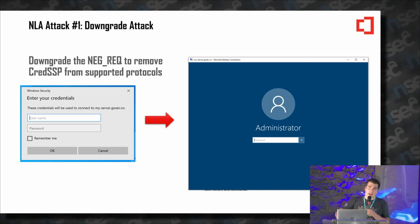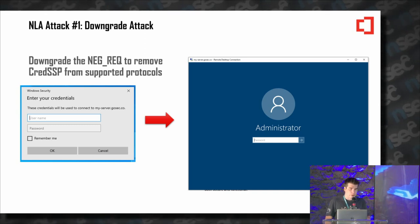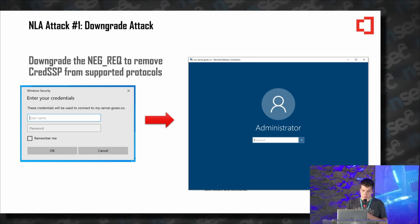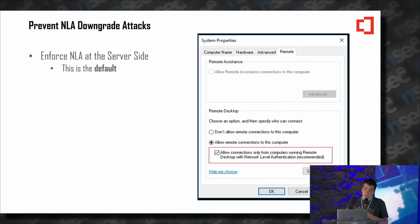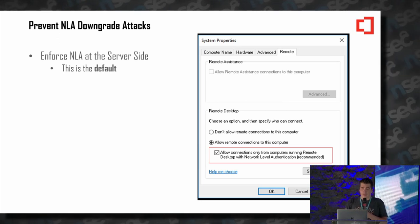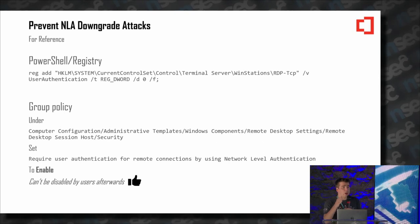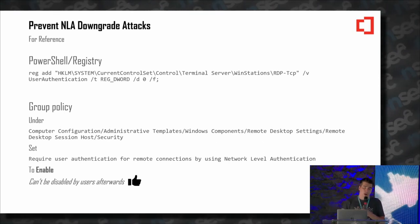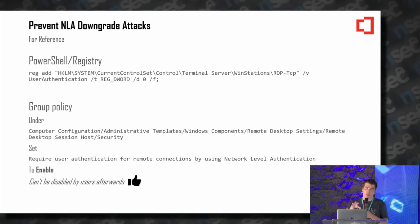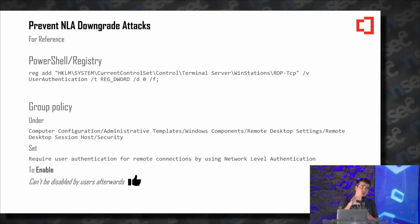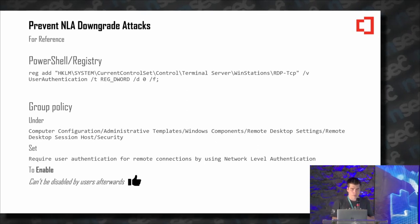So how do we attack NLA? The first obvious attack is the downgrade attack, and that works. How do you prevent it? You enforce NLA at the server side. You can also enforce it with PowerShell or with group policies, which are listed here. One of the group policy ways prevents users from disabling it later, even administrators, which is good.